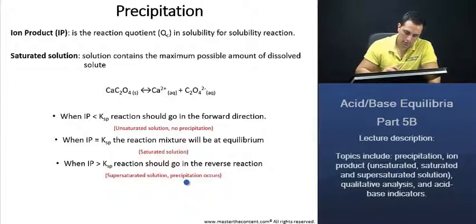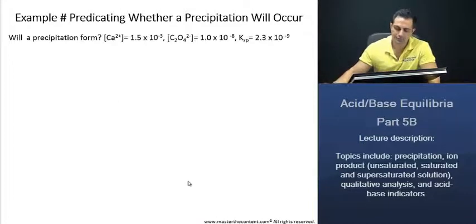Let's do an example of this and demonstrate the following. Example: predicting whether a precipitation will occur. Will a precipitation form when we have the following concentrations of our calcium ion and our oxalate ion as well, and the solubility product is 2.3 times 10 to the power of negative 9?